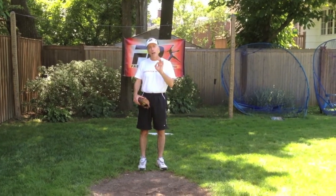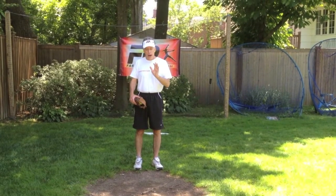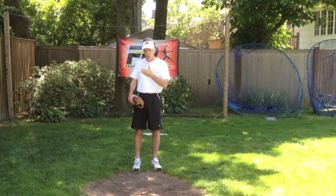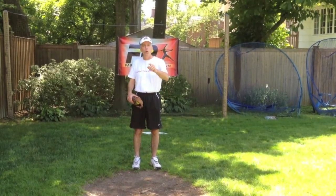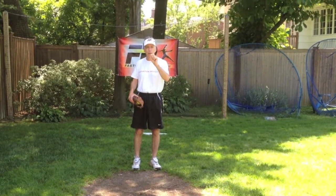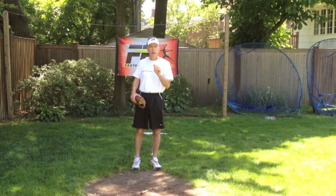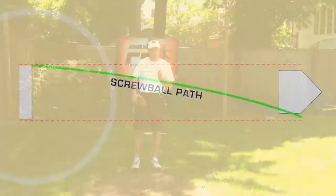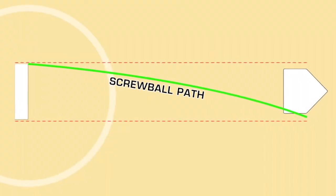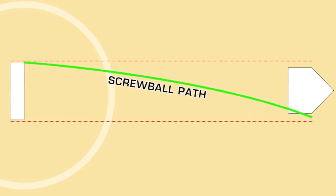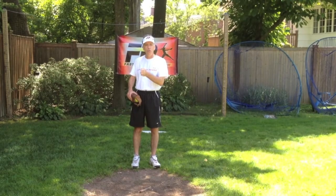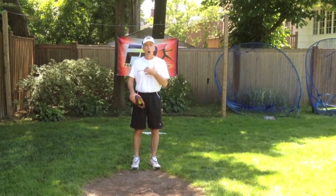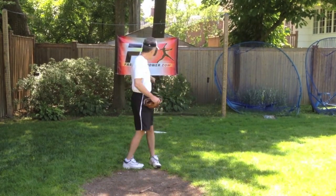When I set up to throw a screwball, how I place my feet is going to determine my ability to follow and create a hand path — a throw zone — that is specific for a screwball. A screwball is a running pitch. It uses the entire lane and cuts from one side of it to the other. If you're a left-handed pitcher, it cuts from the right-hand portion of the lane to the left. As a right-handed pitcher, I'm going to move back to the pitching rubber now.